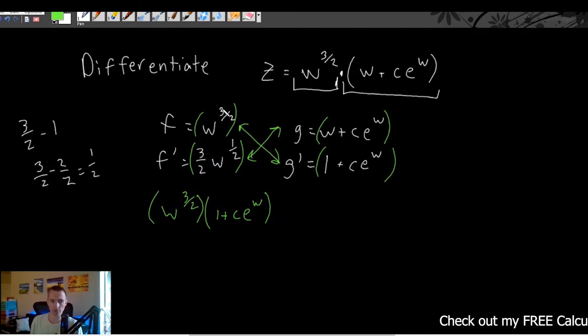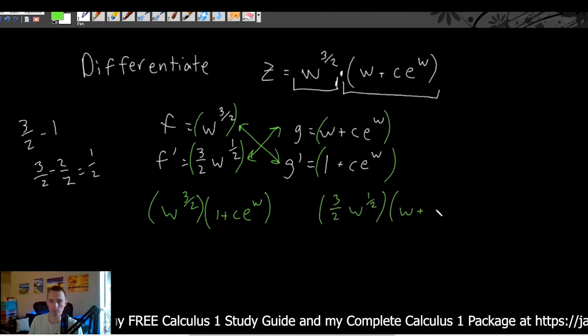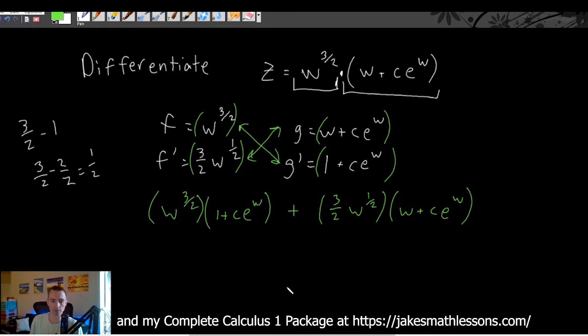So we've done this one times this one. Now we need to do the derivative of this one times the original of the other. So we'll do three halves w to the one half times all this right here, w plus ce to the w. And then once we've done our two across multiplying, then we just add these two things together, just throw a plus sign in there.